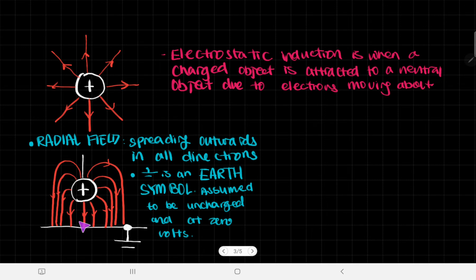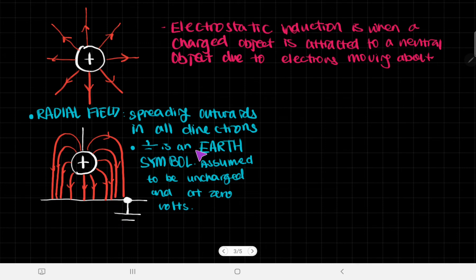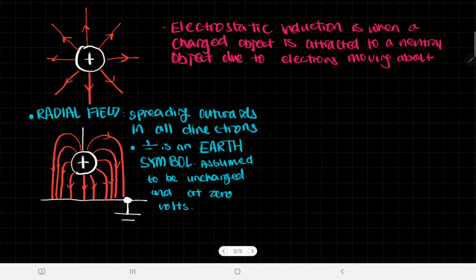This other field is basically what happens when a charged field is placed next to something that's completely neutral. We can see this because of the Earth symbol here, indicating it's assumed to be uncharged and at zero volts. When connected to Earth, it becomes as neutral as possible. The field lines extend from the positive charge, attracted to the negative charges on the neutral object. This is electrostatic induction — when a charged object is attracted to a neutral object due to electrons that can move about. Remember, it's electrons moving, not protons.